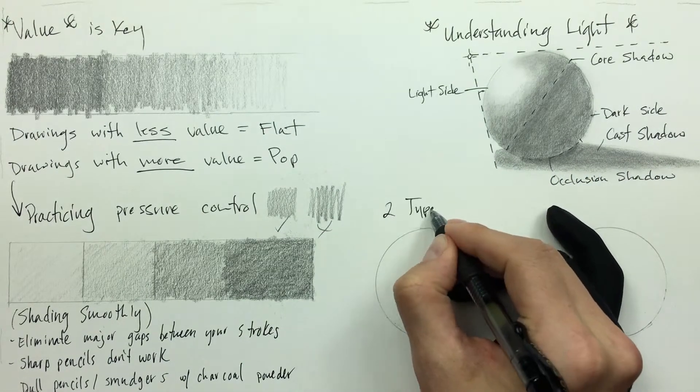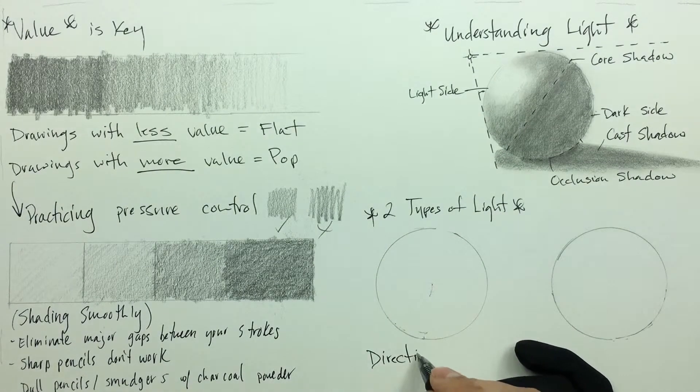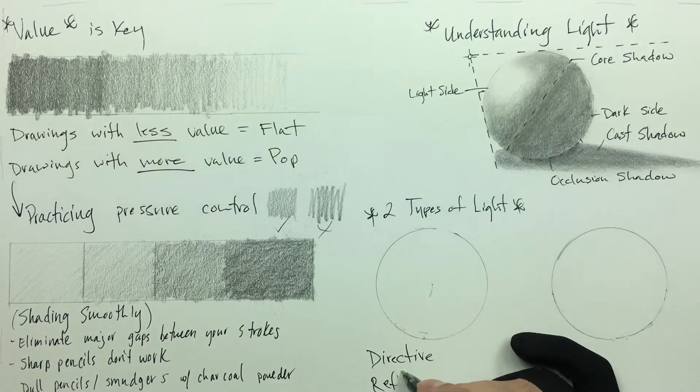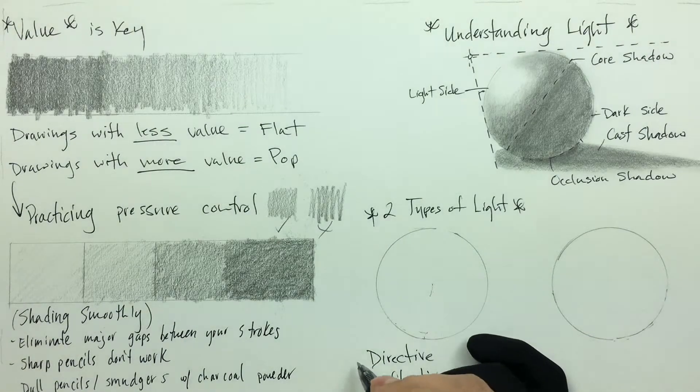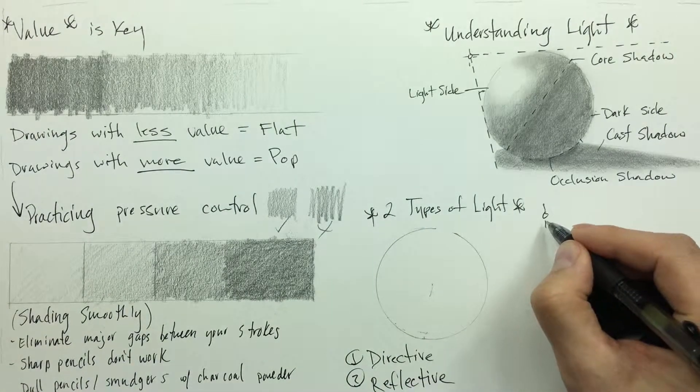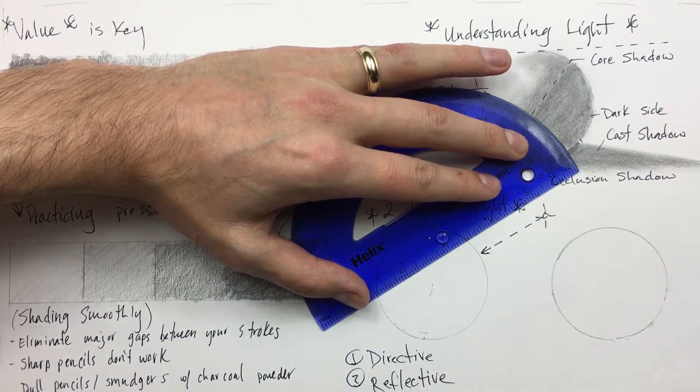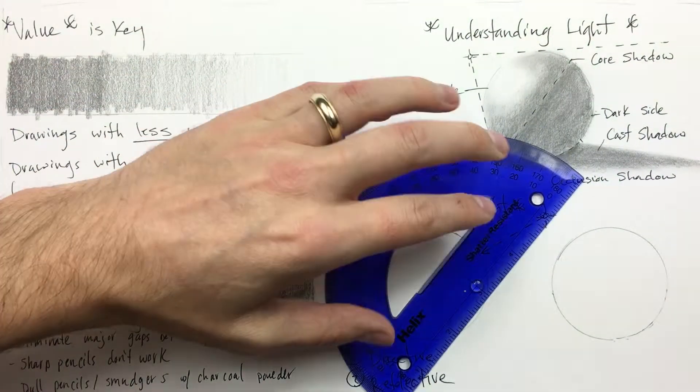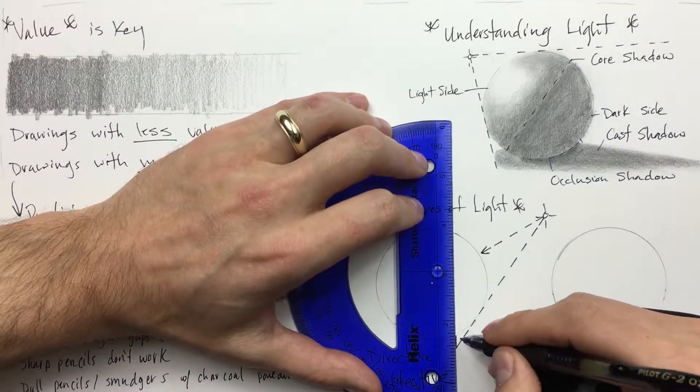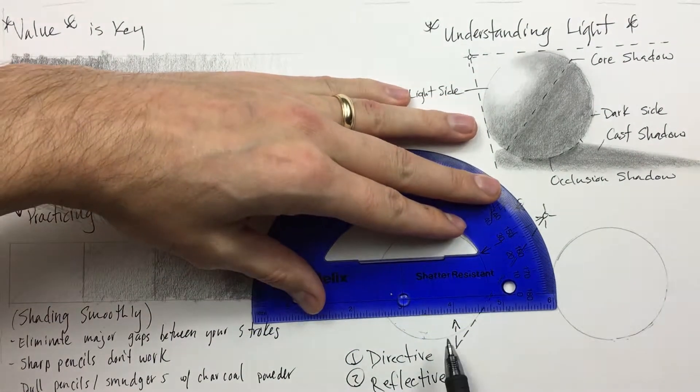Moving on, there are two types of light that you need to be aware of. Those two types of light are what is known as directive light and reflective light. So as with the first example we're going to add our light source here. We have our directive light hitting the circle straight on, and then we have our reflective light hitting the table and then reflecting off the table and shining onto the circle itself.